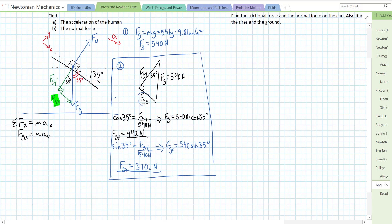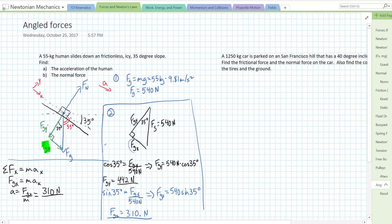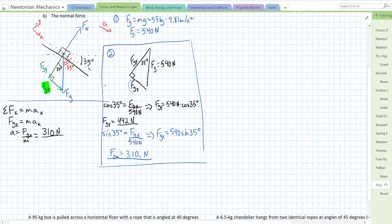So, fgx equals mass times acceleration in the x. We know what fgx is. It's 310. We know what mass is. So, we can solve for a. a equals fgx over m. That's going to be 310 newtons over our mass, which was 55 kilograms. 55 kilograms. So, 310 over 55. 5.66 meters per second squared. There's our answer number one.